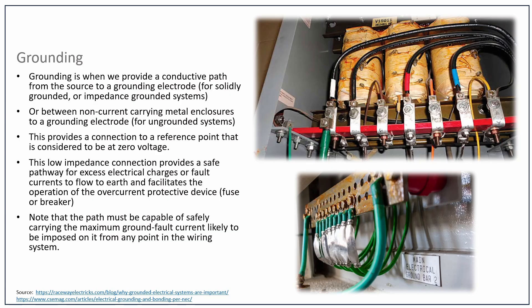The path must be capable of safely carrying the maximum ground fault current likely to be imposed on it from any point in the wiring system. So there's a minimum size for grounding conductors, obviously based on the fact that this is our main thing that keeps our system safe — it has to have a lot of current carrying capability and be sized properly. We'll talk about how to size those later on. Right now we're just talking about the terms grounding versus bonding. Grounding is essentially providing a reference to earth.